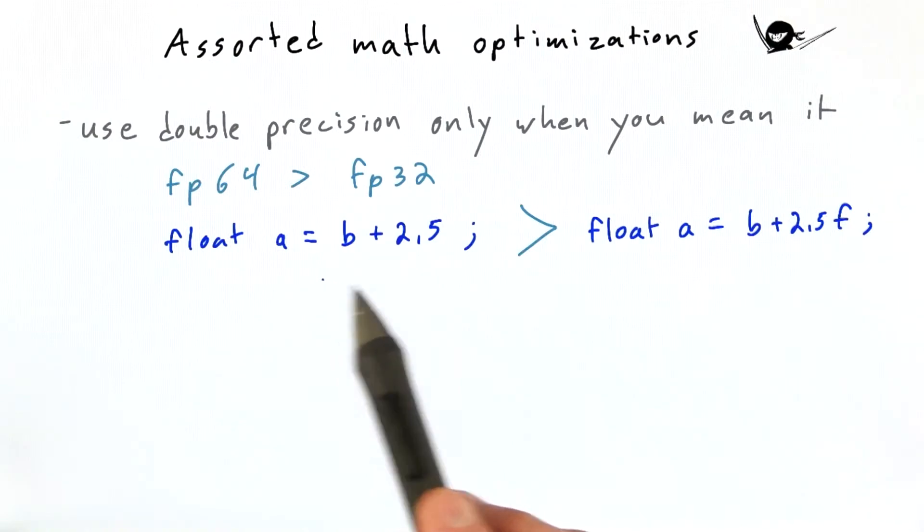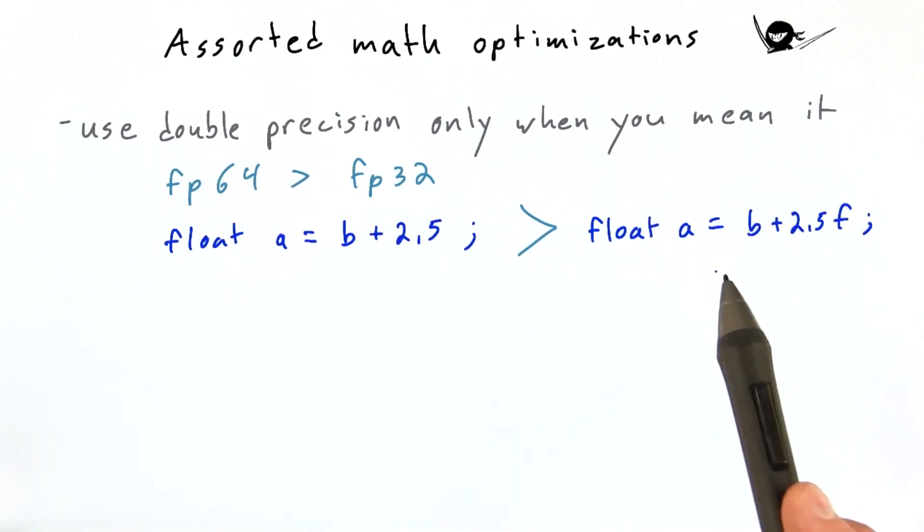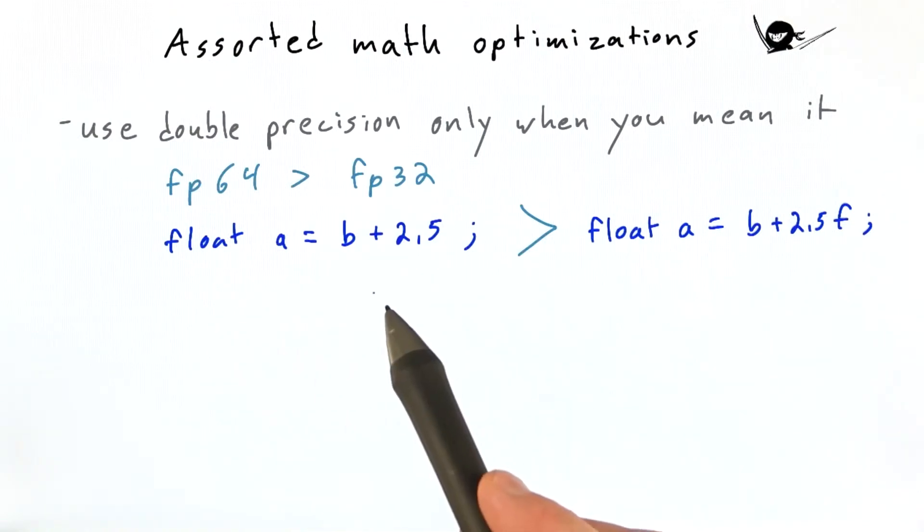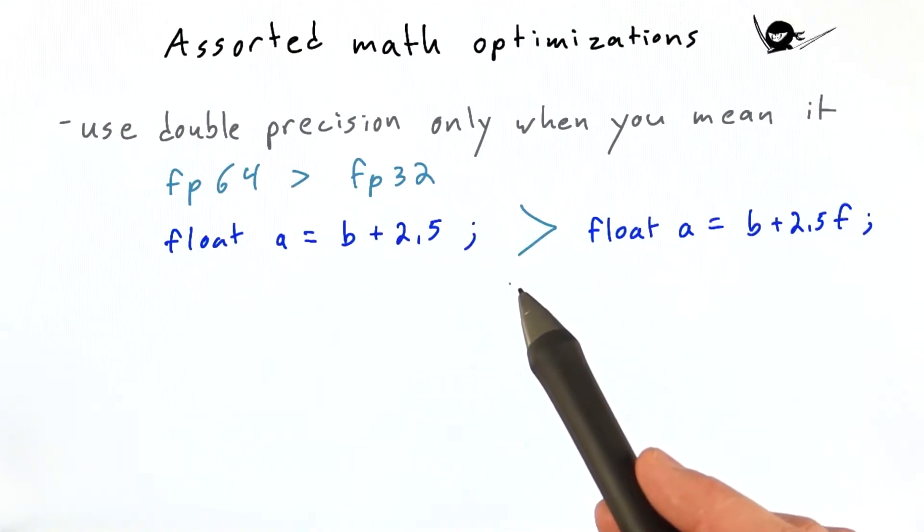Therefore, this statement on the left will take longer to execute than this one on the right. It's a subtle distinction, and clearly, sometimes you need to use double precision, but if you're concerned about performance and you're trying to squeeze the last few percent out of your kernels, only use it when you're absolutely intending to use it.